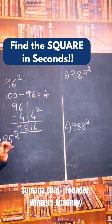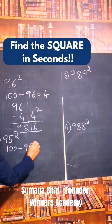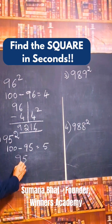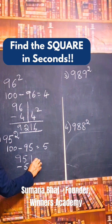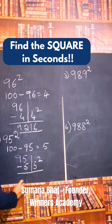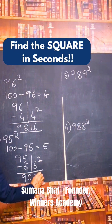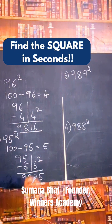Now let us see for the number 95. The base is 100. The difference is 5. So 95 minus 5 is 90, and 5 squared is 25. That gives us 9025. So 95 squared is 9025.